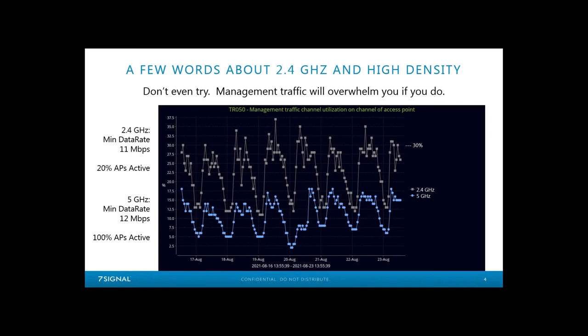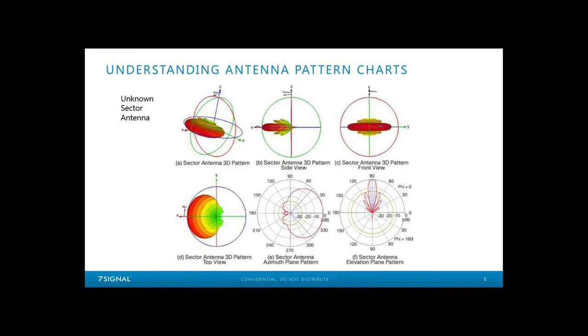We're going to be mostly talking about 5 GHz, and everybody's anxiously awaiting 6 GHz. We talked about these a little bit on a previous presentation. I found this nice diagram — I'd love to give credit to whoever did it, but I found it about 20 times on the internet with no attribution. It's an unknown sector antenna of some sort, and I like the way they've rendered this one.